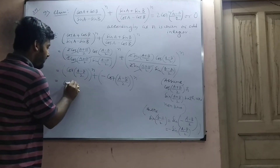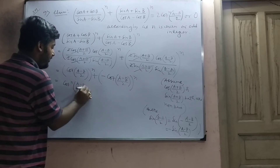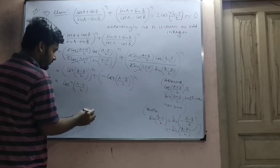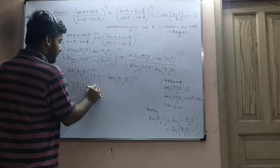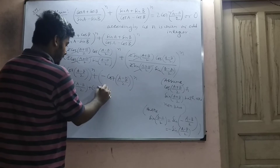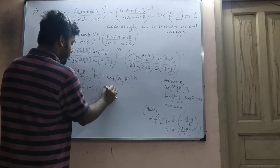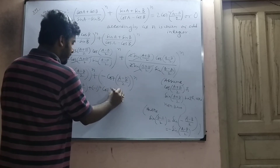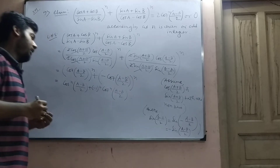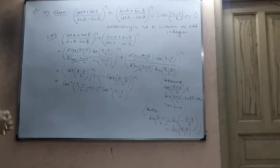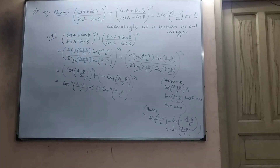So you get cot^n((A−B)/2) plus (−1)^n · cot^n((A−B)/2). Now you have two cases: n is even and n is odd.